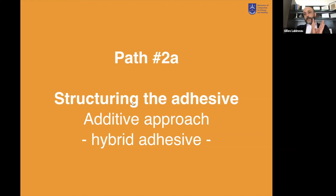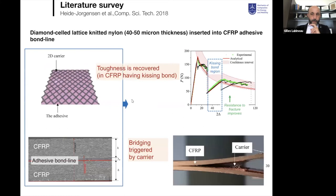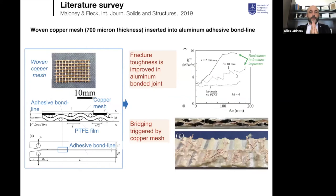The second strategy is about structuring the adhesive itself. First, the additive approach using a hybrid adhesive. Looking at literature — the work of Hedy Jorgensen — a classical adhesive layer with a thermoplastic net used to handle the adhesive film can produce some bridging in case of kissing bond, with DCB curve improvement noted. Related work by Norman Fleck and Maloney improved bonding between metal substrates by introducing a structured adhesive bond line using copper between two metallic substrates.